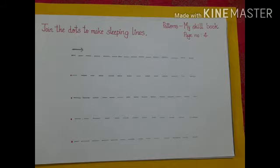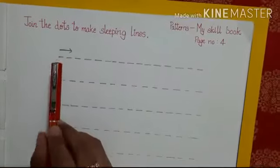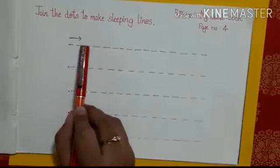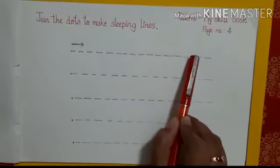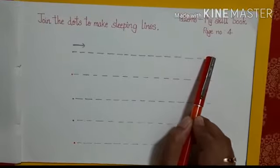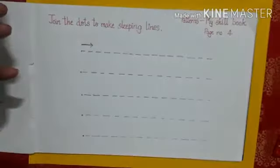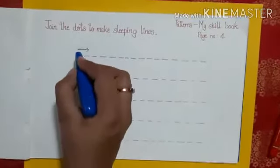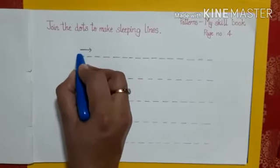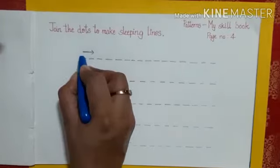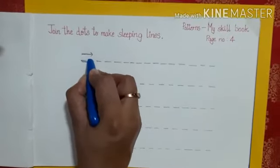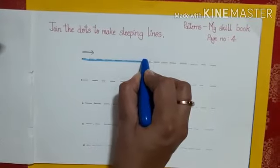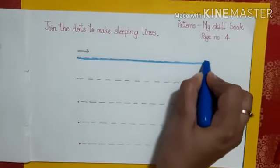Ma'am has told you to make the sleeping line. Yes, you will start from the left side and you will go straight forward. Yes children, you will hold your crayon properly and keep it on the starting point, that is the left side, and you will move forward towards the other side of the book.